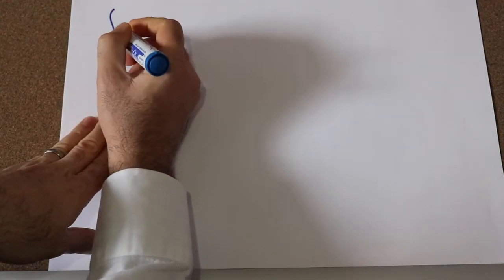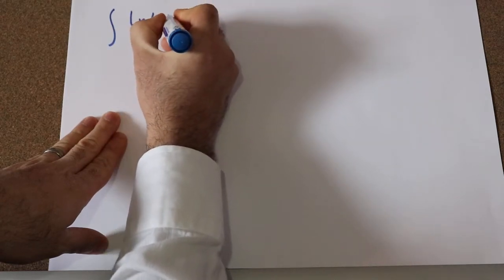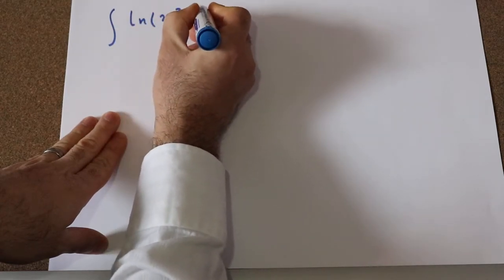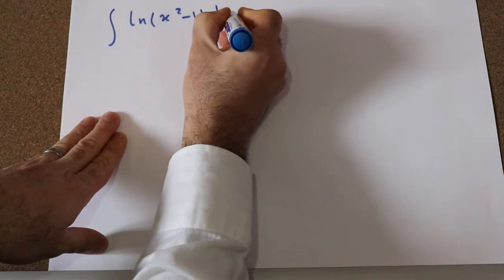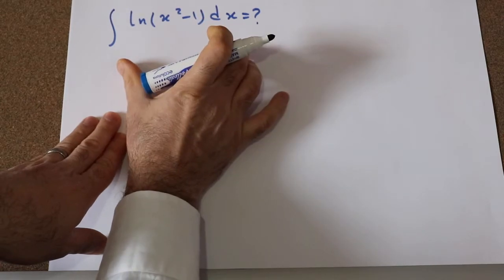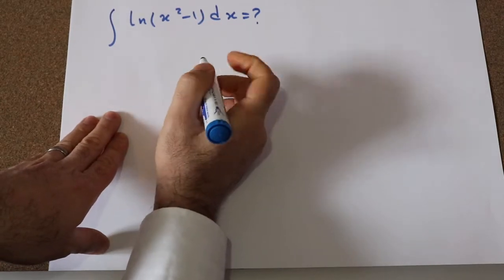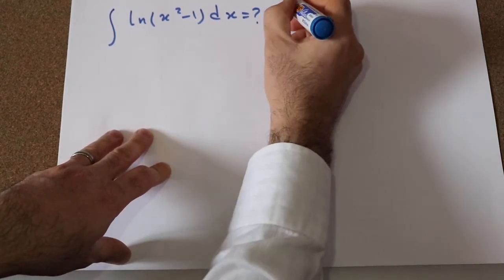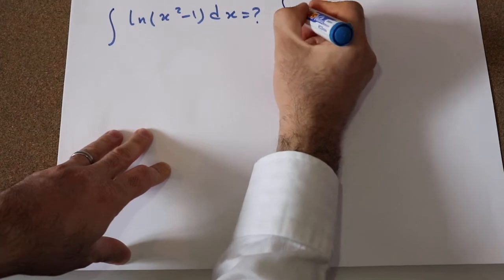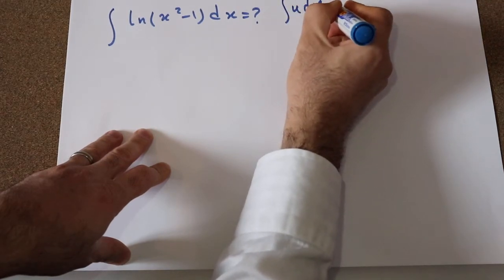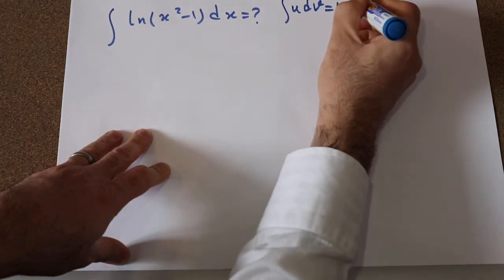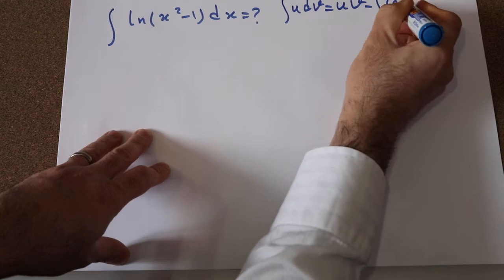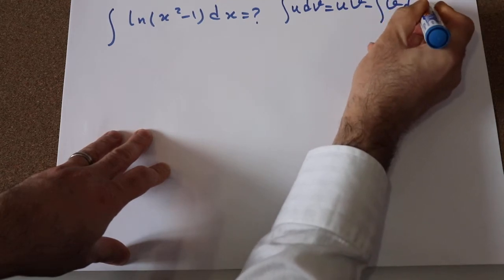Hello, today I'm going to show you how to calculate the integral of ln(x² - 1) dx. You can solve this integral using the formula for integration by parts, that is: the integral of u dv is equal to u·v minus the integral of v du.